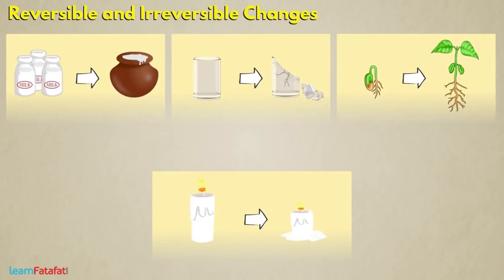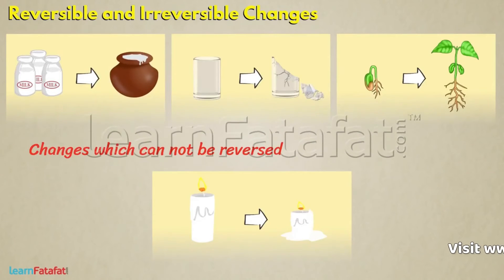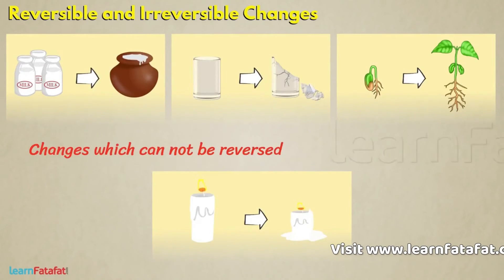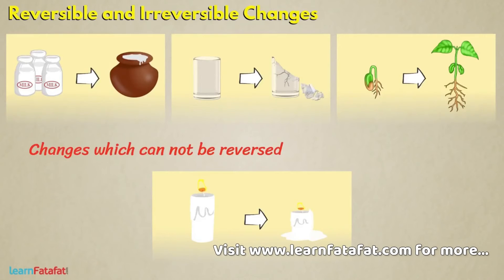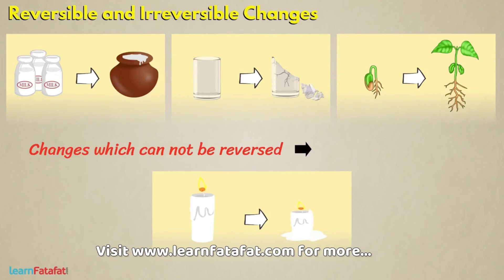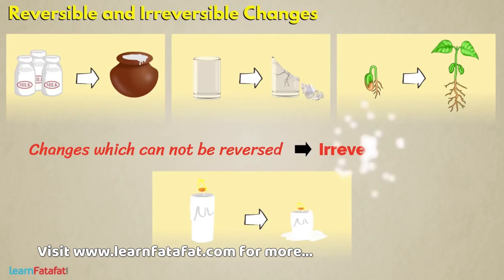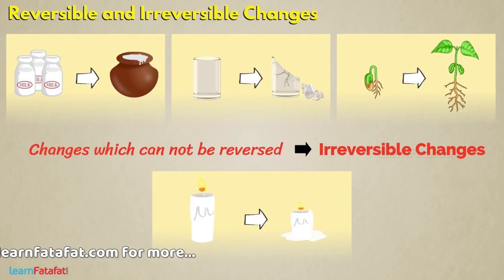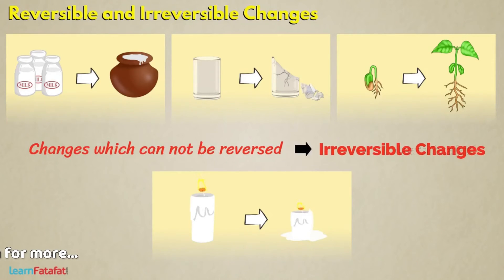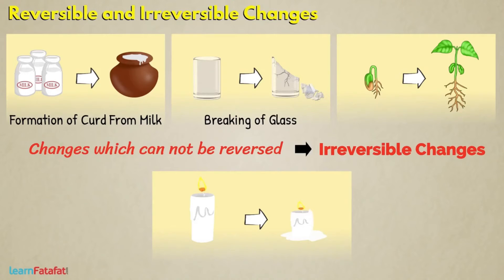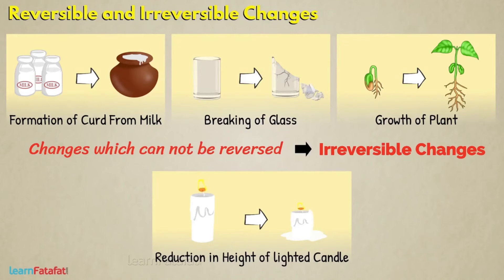There are other changes which cannot be reversed, i.e., changes are permanent and cannot be undone. Such changes are called irreversible changes. For example, formation of curd from milk, breaking of glass, growth of plant, reduction in height of a lighted candle, etc. Such changes are irreversible changes.